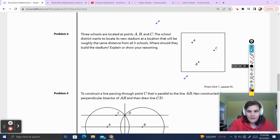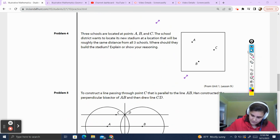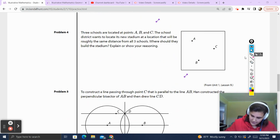Problem number four. This goes back to constructions. Three schools are located at A, B, and C. So we've got a little schoolhouse. We can draw it. Maybe we can't draw it. Okay, we're struggling with drawing at the moment. Three schools are located at points A, B, and C. The school district wants to locate its new stadium at a location that will be roughly the same distance from all three schools. Where should they build the stadium? Explain your reasoning.